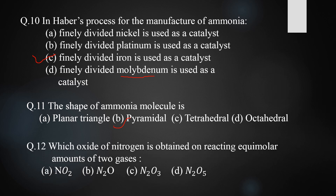Question twelve: which oxide of nitrogen is obtained on reacting equimolar amounts of two gases? The answer is dinitrogen trioxide (N2O3), which is formed by combining equimolar amounts of NO and NO2. When NO and NO2 combine in equimolar amounts, they produce N2O3, dinitrogen trioxide.